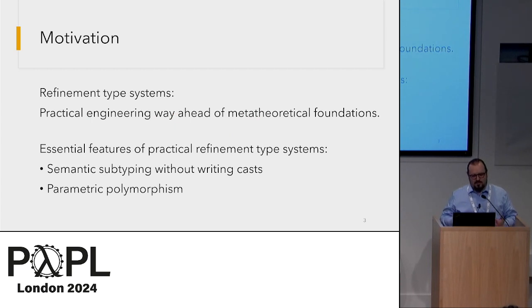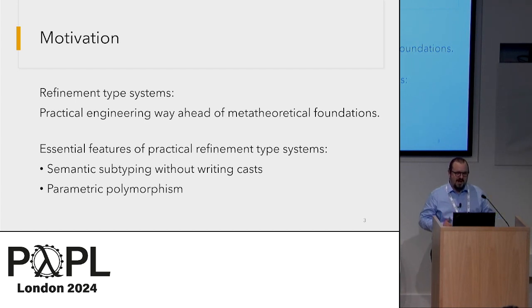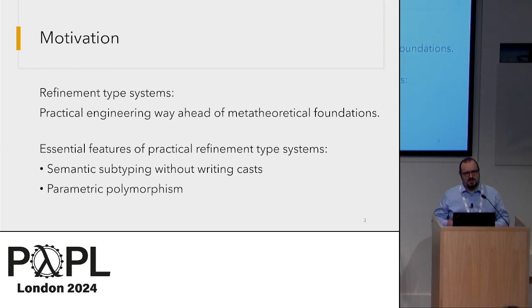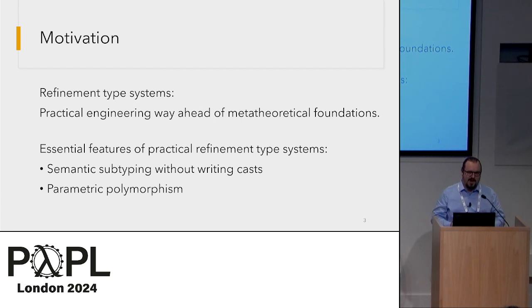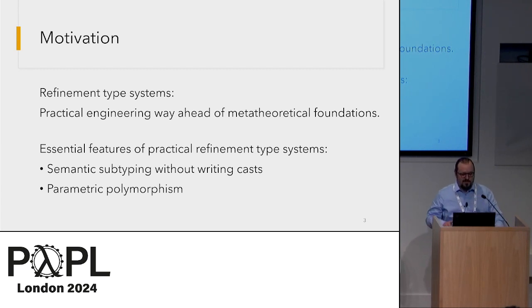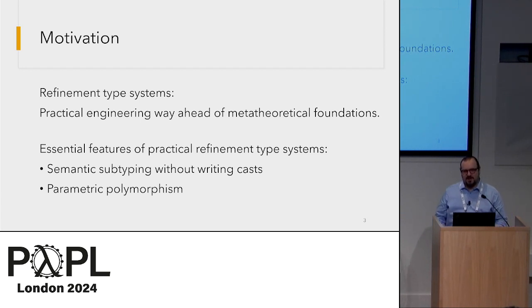The motivation of our project was that practical refinement types — the engineering of these — has gotten way ahead of the metatheoretical foundations, and existing formalisms don't capture the essence of refinement types. The essential features we're interested in are both first semantic subtyping without writing casts, so the system can check subtyping obligations at function calls automatically, and parametric polymorphism as well.